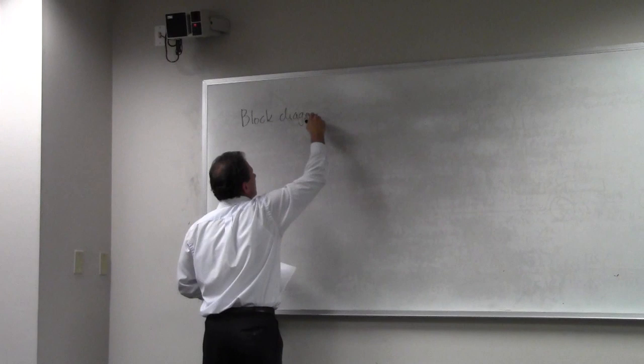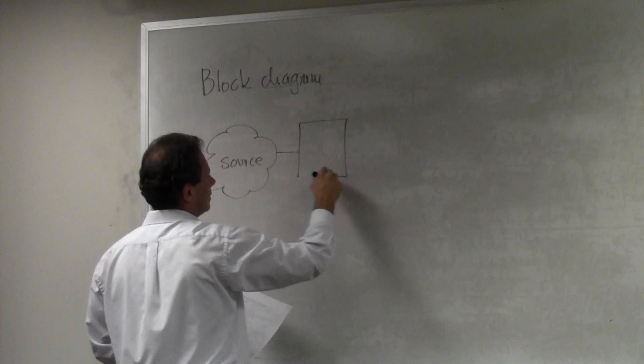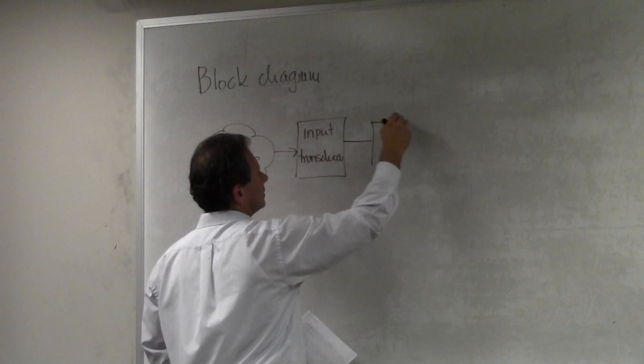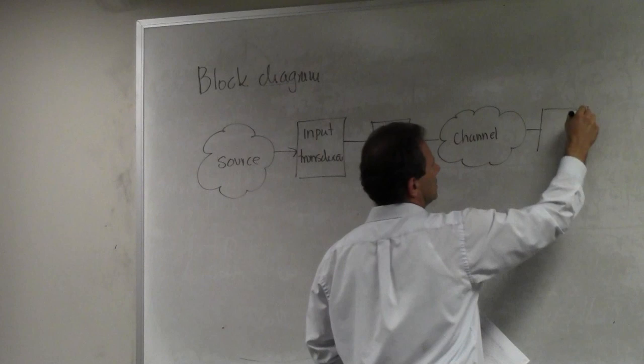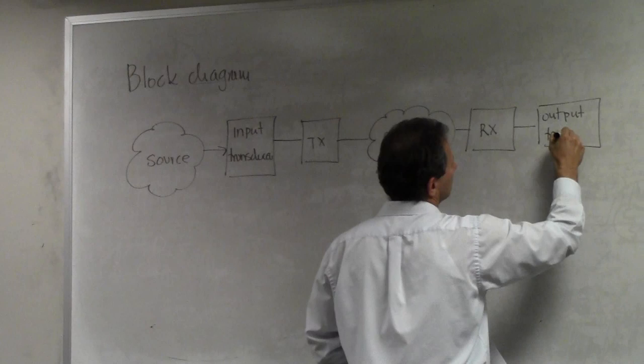So, the block diagram. There's an information source — let me draw it quickly and then talk about each element. So we have: information source, input transducer, transmitter, channel, receiver, output transducer, and information sink.